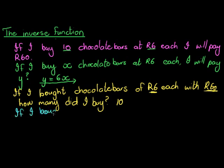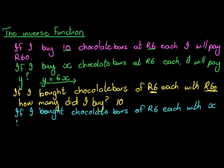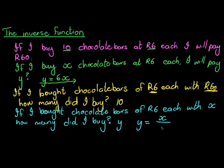If I bought chocolate bars of R6 each with x rand, how many did I buy? And this time my answer is gonna be y. So how will we work out y? Well, this time we can see, how did I work out the previous one is to take the amount of money I spent, divide it by the unit price, the price per chocolate bar, and then I got my 10. So the amount of money I spent is x, so y equals x divide it with the R6, divide it with the 6.